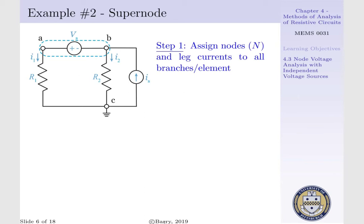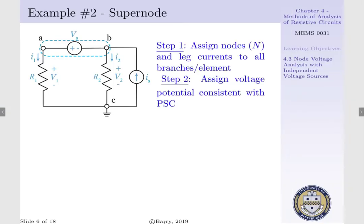You could view Is as running from B to A through our voltage source, however, this is not necessary. Step 2 is to assign our voltage potentials consistent with our passive sign convention. V1 corresponds to R1, dictated by the directionality of I1, and V2 corresponds to R2, dictated by the directionality of I2.